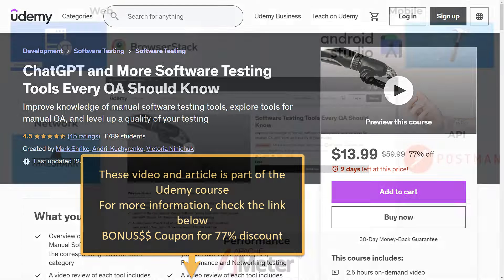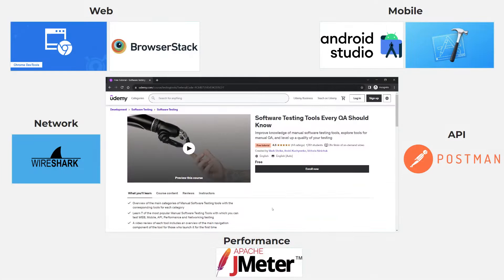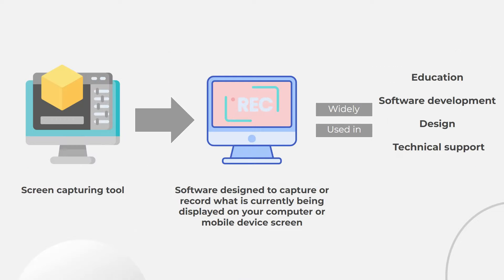In our course we will already talk about web, mobile, networking, API and performance tools that can help QA engineers in their work. All of them are very complex and take a lot of time for beginners to learn. Today we want to talk about a less complex but no less, and perhaps more important, tool used by all testers — and that is screen capture tools.